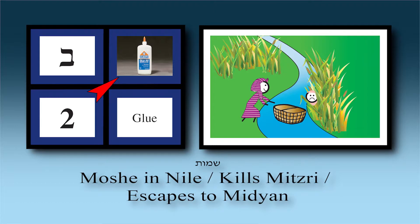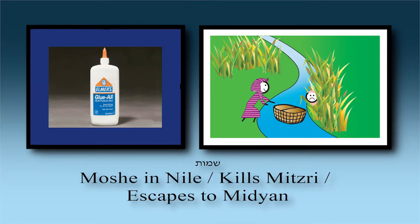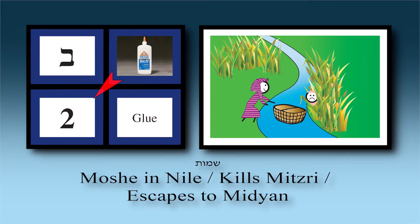For our association between the simon 'glue' and the information in chapter two: imagine Moshe Rabbeinu being glued into the basket so Batya couldn't pull him out — she had to take the whole basket with him. Then imagine him using a glue gun to fire at Datan and Aviram who were fighting, stopping them — they're glued into position. So that's chapter two: Moshe glued into the basket and using a glue gun to stop Datan and Aviram's fight.